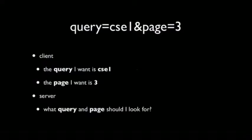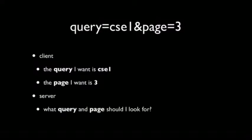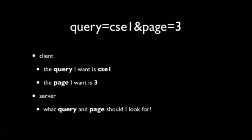Those are just names for the different parts of the URL. The query string format is called key-value pairs. The idea is you'll have something like query equals CSE1 and page equals 3 — a standardized format for transferring information from client to server. The server can say: I'm getting a request from a client who needs to tell me what page number they want, and they put that page number in the URL. So I can just ask: what is the value for the key page? It's just a standardized way of encoding some information.